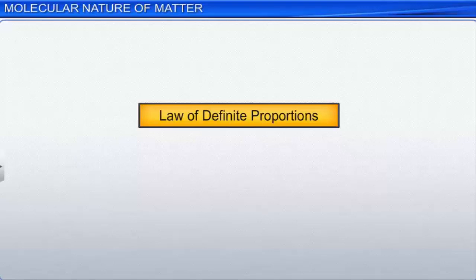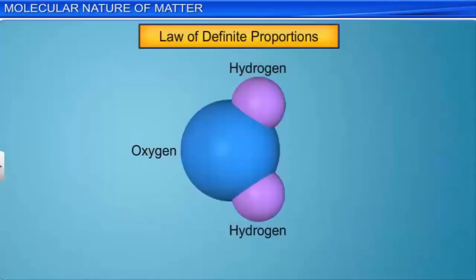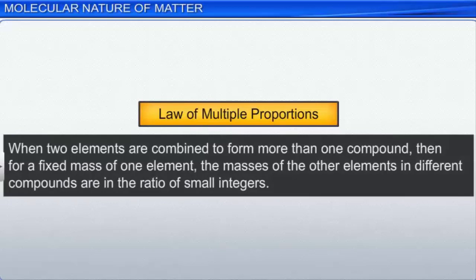The law of definite proportions states that a given compound always contains the same proportion of elements by mass. For example, consider a water molecule. The ratio of the mass of oxygen, MO, to the mass of hydrogen, MH, in a water molecule is always fixed and is independent of how the water molecule is formed. The law of multiple proportions states that when two elements are combined to form more than one compound, then for a fixed mass of one element, the masses of the other elements in different compounds are in the ratio of small integers.